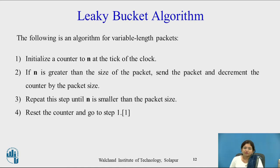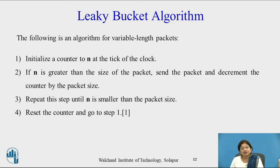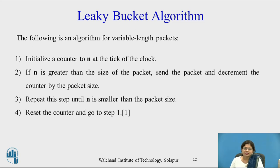Now let us look at the leaky bucket algorithm for variable-length packets. The first step is to initialize the counter N at each tick of the clock. The second step is: if N is greater than the size of the packet at the front of the queue, send the packet and decrement the counter by the packet size. The third step is to repeat until N is smaller than the next packet size. The fourth step is to reset the counter and go back to step one.